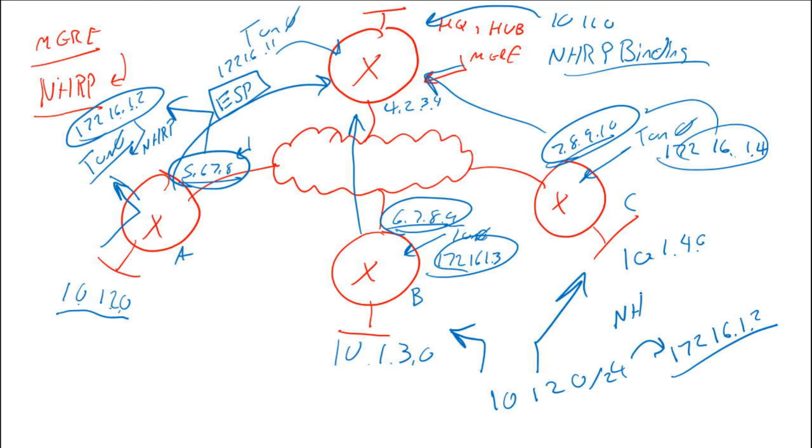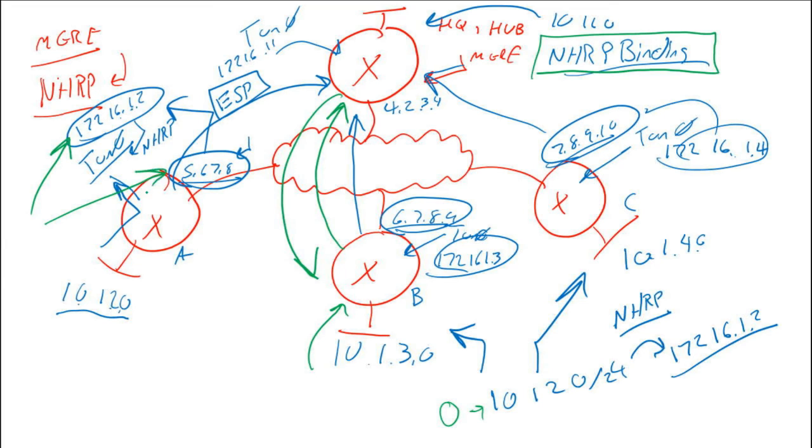So basically, let's say that B wanted to get there. Interesting packet comes in, maybe somebody on the 10.1.3 subnet sends an ICMP ping to 10.1.2.5. We look at our table, we see that in OSPF we learned 10.1.2.0 is reachable at 172.16.1.2. So we perform an NHRP lookup to the hub. He leverages that NHRP binding table and he sends a response back and he gives it this mapping that we saw earlier, that 172.16.1.2 is reachable at 5.6.7.8.